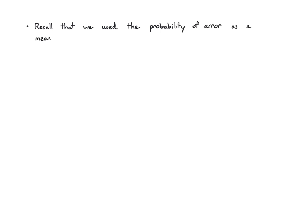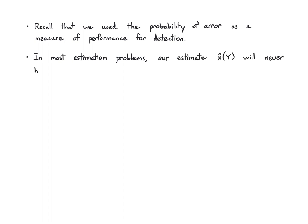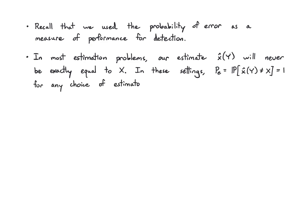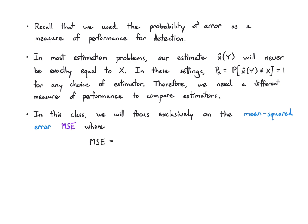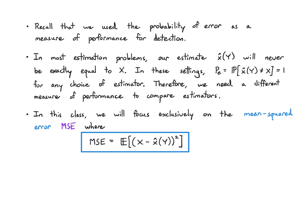Recall that we were using probability of error as a measure of performance for detection. The problem is that in most estimation scenarios our estimate will never be exactly equal to the true value x — the probability of error will basically be one for any choice of estimator, even a good one. So we need a better metric. There are lots of criteria we could pick, but we're going to focus exclusively on mean squared error (MSE), which is the expectation of (x − x̂(y))².